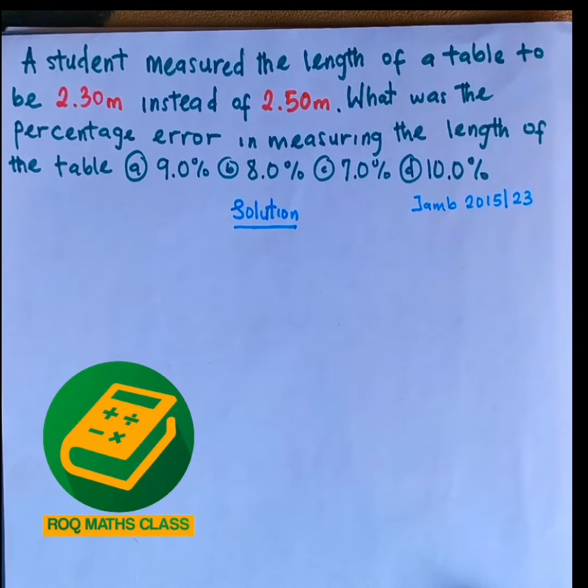ROQ Maths Class. A student measured the length of a table to be 2.30 meters instead of 2.50 meters. What was the percentage error in measuring the length of the table?